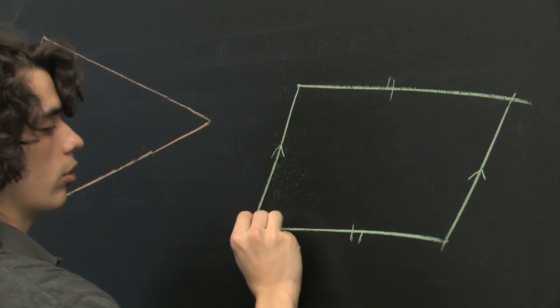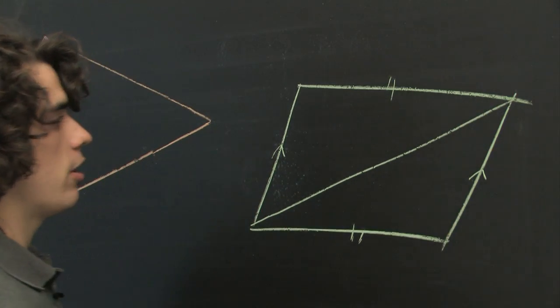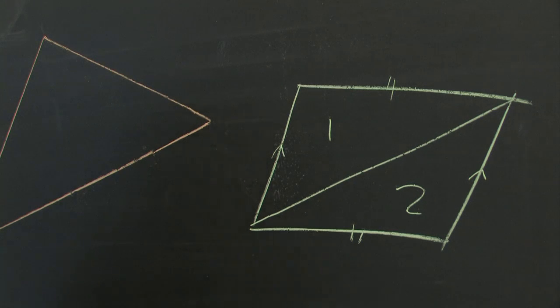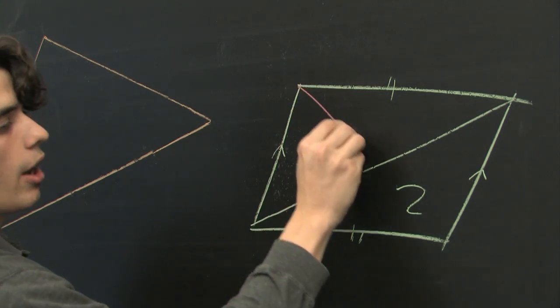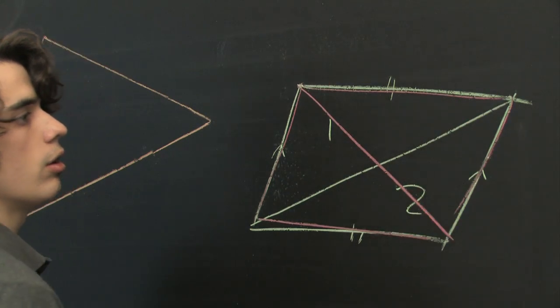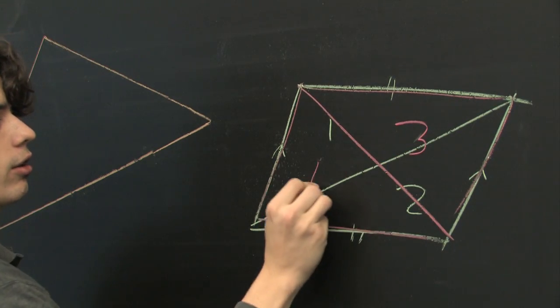For example, you can cross this diagonal here and you get those two triangles. Across the opposite diagonal here, you get these triangles, three and four.